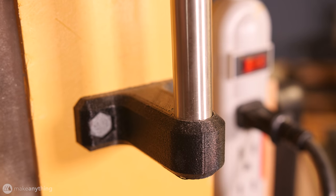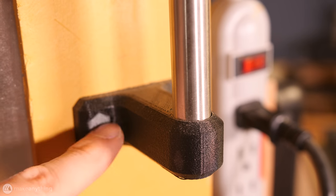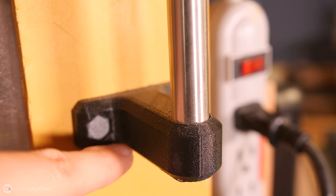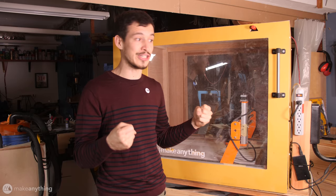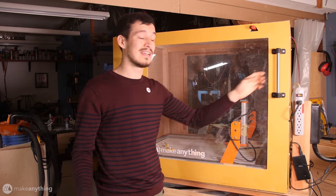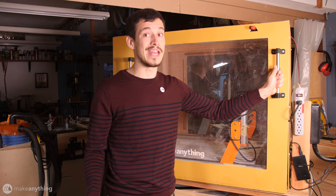And I built these custom ends that go on the top and bottom. And once again I printed these with that Nylon X material. So that this thing is very sturdy. We don't want the handles falling off of the door. And these aren't going anywhere.